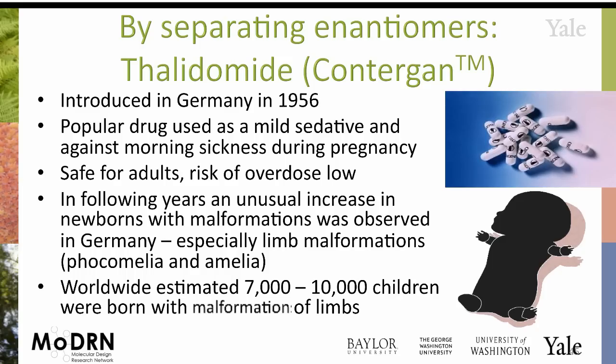One of the most infamous cases of a drug being introduced was thalidomide, and thalidomide was used for morning sickness during pregnancy, primarily in Germany, a little bit in the UK. It was introduced in Germany in the 50s, was used widely at least until the mid-60s. It's estimated that somewhere between 7,000 and 10,000 children were born with dramatic malformation of limbs — so-called thalidomide babies.